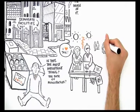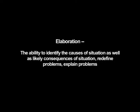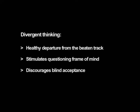Fluency means the ability to come up with a large number of ideas, solutions, concepts, or words in response to a given stimulus. Flexibility means the ability to come up with a variety of ideas, solutions, or techniques. Originality means the ability to come up with useful ideas or solutions that others have not thought of, with sensitivity to unusual issues, feelings, anomalies, or problems. Elaboration means the ability to identify the causes of a situation as well as likely consequences, and to redefine and explain problems. Divergent thinking is a healthy departure from the beaten track that stimulates a questioning frame of mind and discourages blind acceptance.